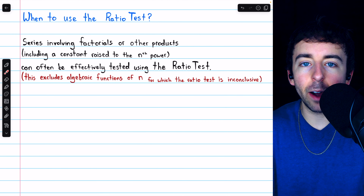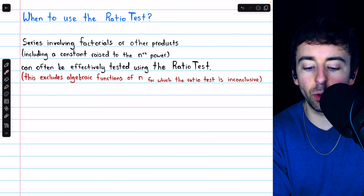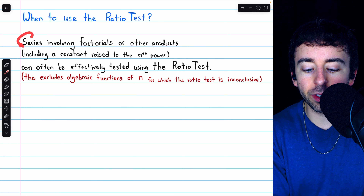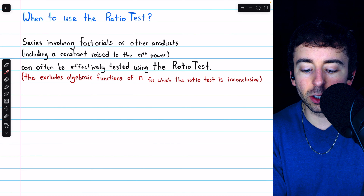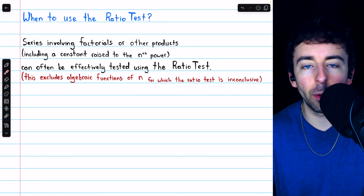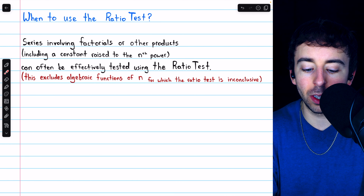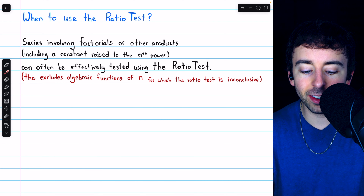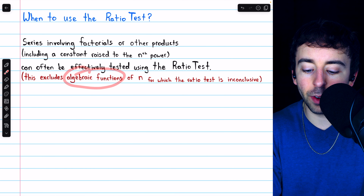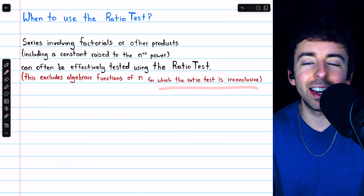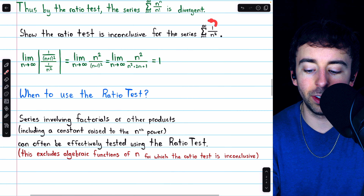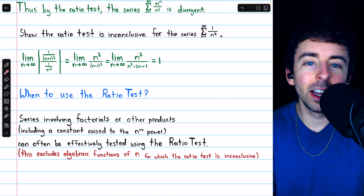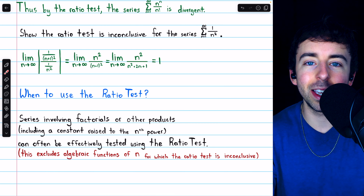We don't want to spend time carrying out an inconclusive test, so this begs the question: when should we use the ratio test? In general, you should consider using the ratio test for series that involve factorials or other products, including a constant raised to the n-th power — so exponentials are often where the ratio test is useful. You're not going to want to use it for algebraic functions of n, as those will give an inconclusive result. Whatever the algebraic function is, if you try the ratio test on it, you'll end up getting a limit of one.